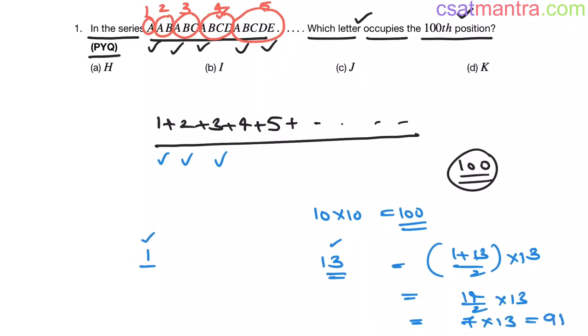So sum of 13 terms from 1 to 13 is 91. If we add one more term, that would be 14. So 91 plus 14, that is more than 100. This 14 is the set which contains 14 letters, the first 14 alphabets.